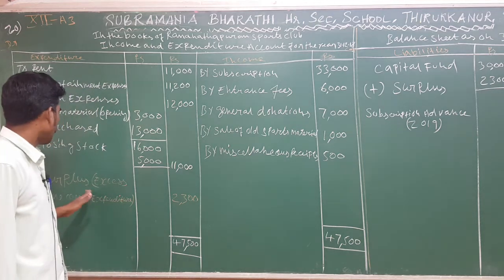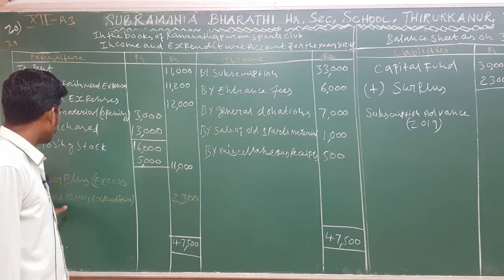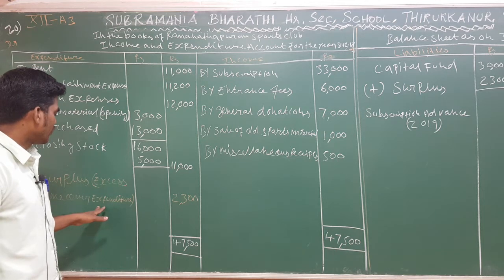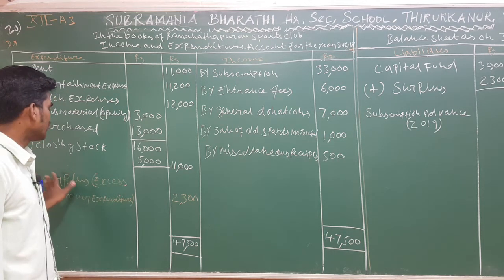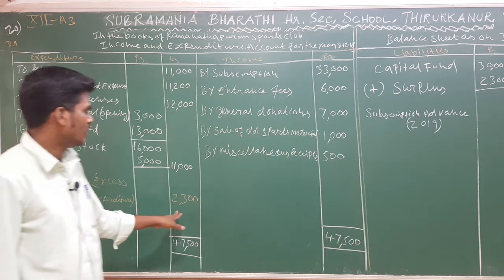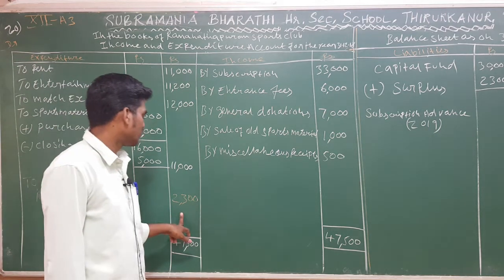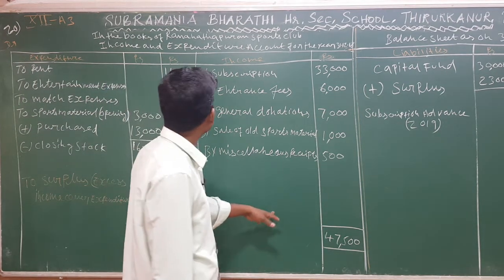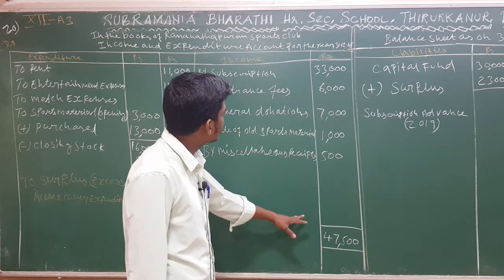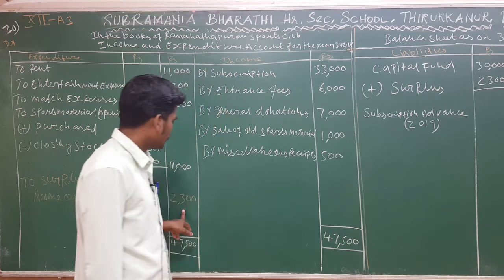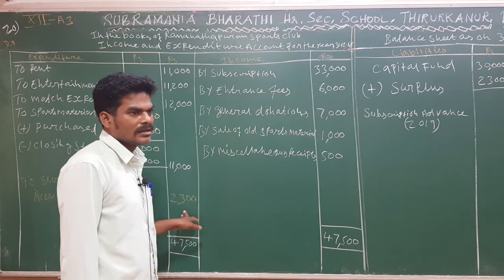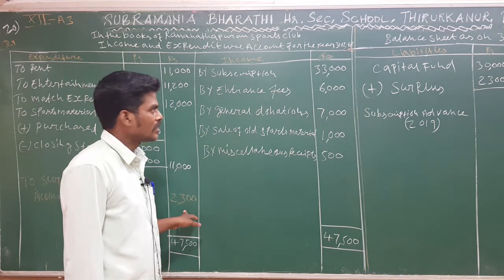The surplus — excess of income over expenditure — is 2,300. This is the difference between total income and total expenditure. The income minus expenditure gives us the surplus of 2,300, which will be carried to the balance sheet.